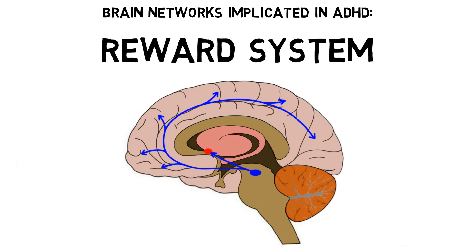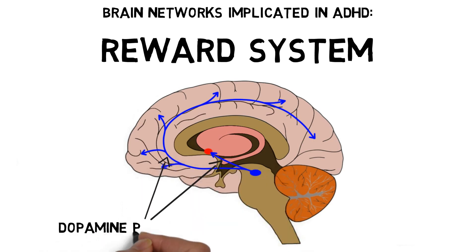The reward system includes some of the major dopamine pathways in the brain, and dopamine is often implicated in ADHD because medications that are commonly used to treat the condition, such as amphetamine and methylphenidate, cause increased transmission of dopamine and norepinephrine.